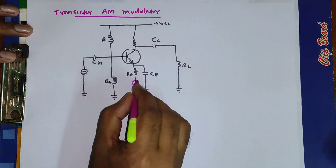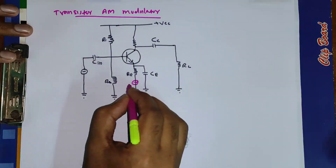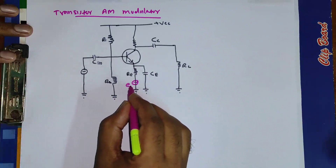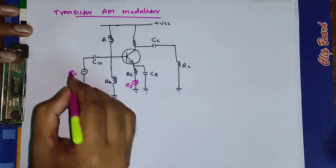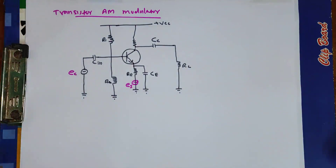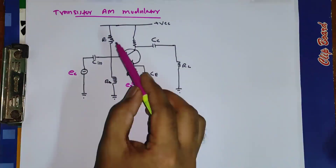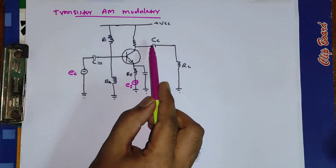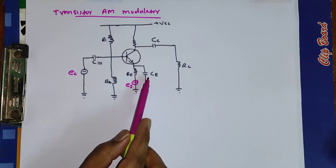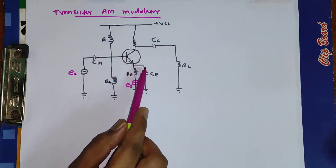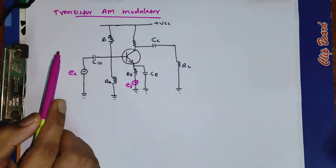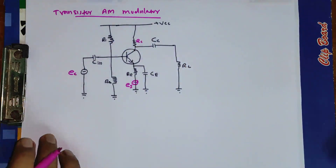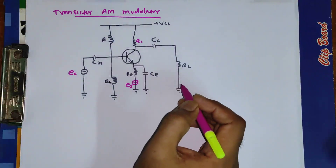You have to give the input signal in the emitter circuit — this is the audio signal ES applied, and here you will apply the carrier signal EC. We have two voltage divider resistances R1 and R2. CIN is the input coupling capacitor, CC is the output coupling capacitor, CE is the bypass capacitor to bypass the signal current to ground, RC is the collector resistance, and RL is the load resistance.